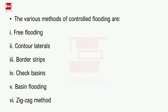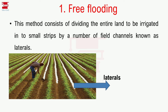Free flooding is a simple method. It consists of dividing the entire land to be irrigated into small strips by a number of field channels known as laterals. The land is divided into small strips using these field channels called laterals.